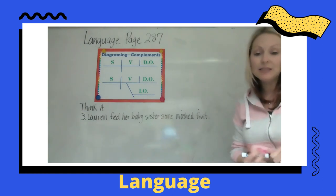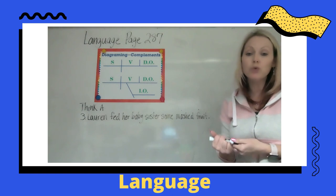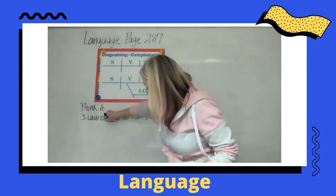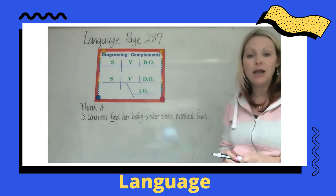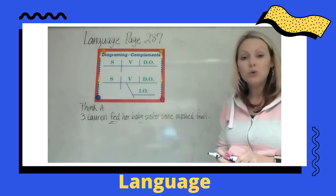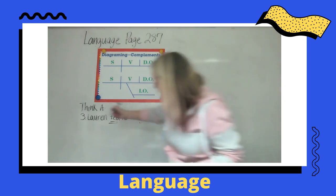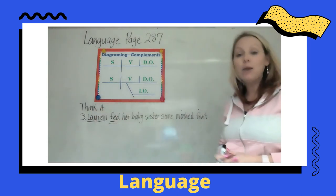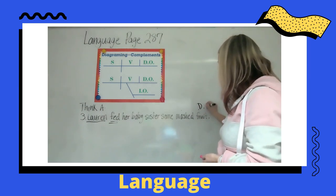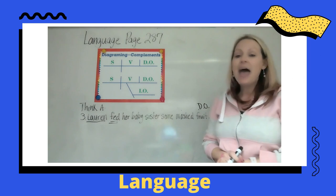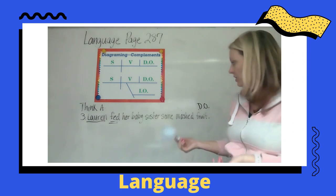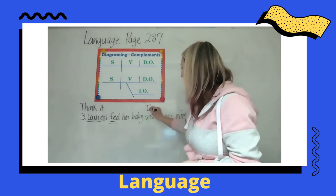What is our verb? Fed — double underline fed. Then what is our subject? Who did the feeding? Lauren. And what did she feed? Here's our direct object: fruit. And to whom did she feed it? She fed her sister.